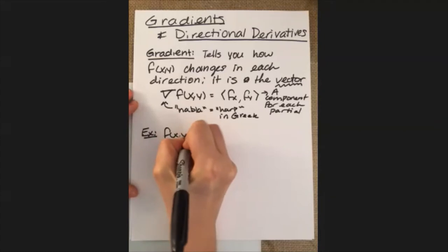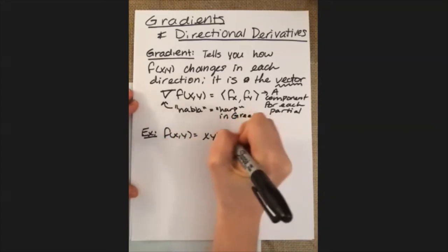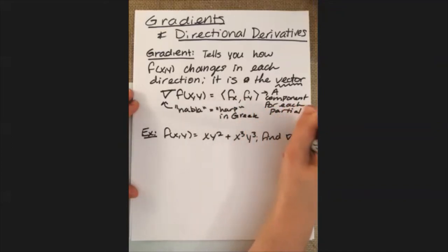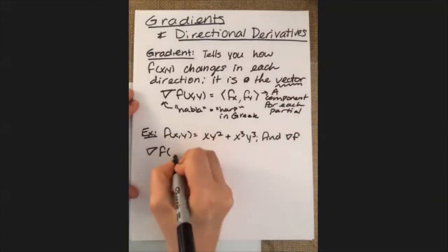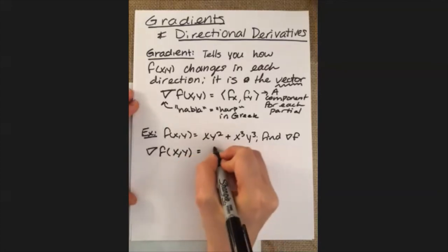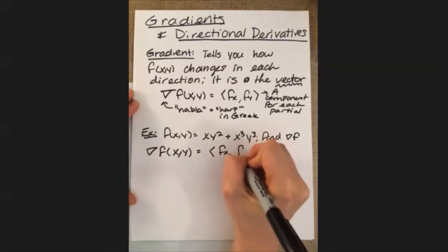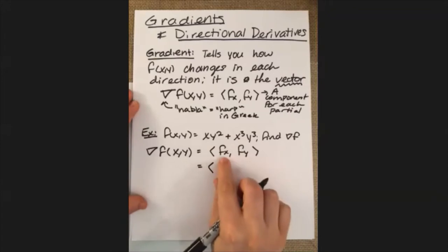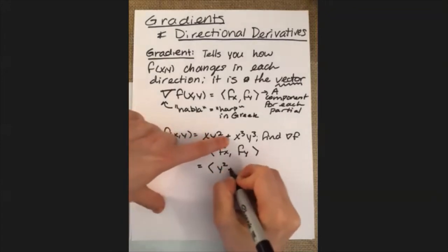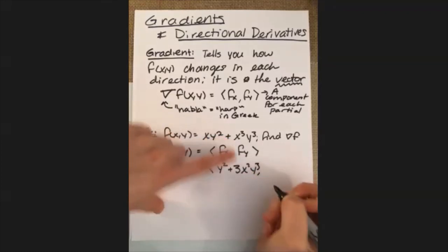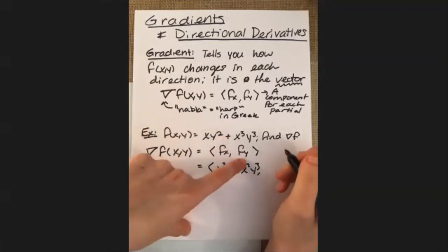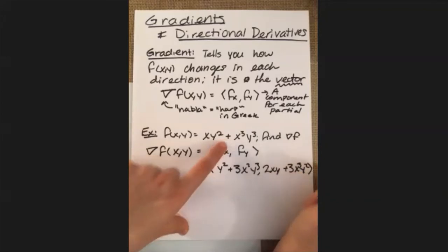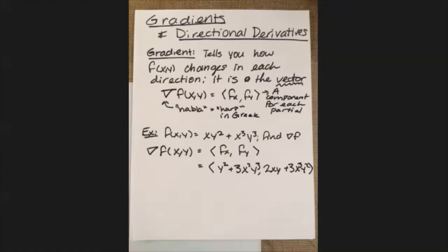We can say that f(x, y) is equal to xy² plus x³y³, and we're going to find the gradient of f. So our gradient of f at (x, y) is equal to the partial with respect to x in the x-component and the partial with respect to y in the y-component. So all we have to do is find those two partial derivatives. The partial with respect to x is just going to be y² plus 3x²y³, and then the partial with respect to y is going to be 2xy plus 3x³y². So that's pretty much all there is to finding the gradient.